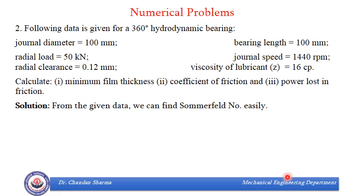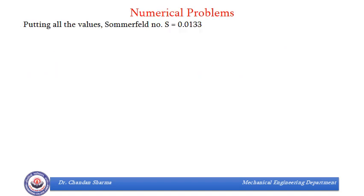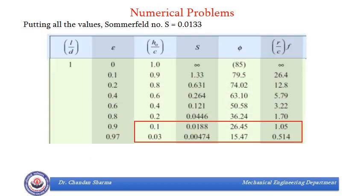So adopting the same procedure that we have adopted in the previous problem, we can easily find what is S over here, because in this question, we have been given R is 50 mm, C is 0.12 mm, mu, we will convert mu, we have been given Z, so we will convert that into mu, that is 16 over 10 to power 9, and pressure we can find, since load is given to us, length and diameter we know already, so it comes out to be 5 MPa. So everything required to determine Sommerfeld number is with us. Putting all these values in the equation, we find Sommerfeld number S as 0.0133.